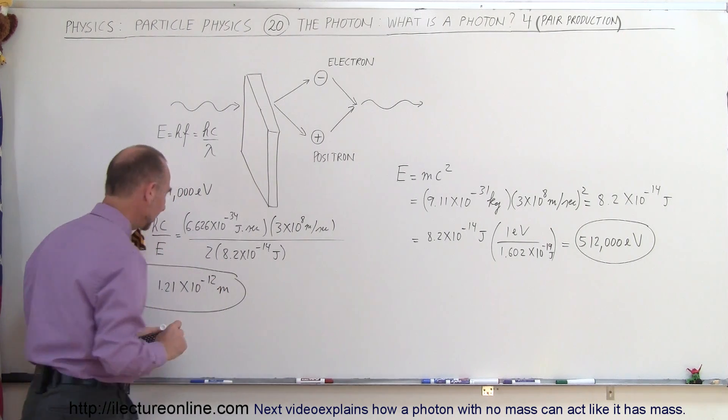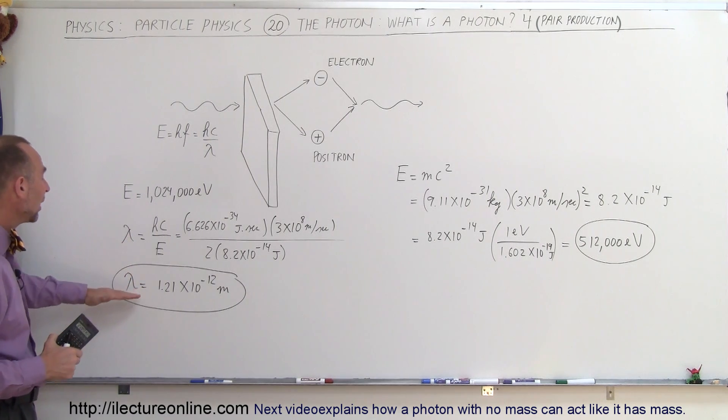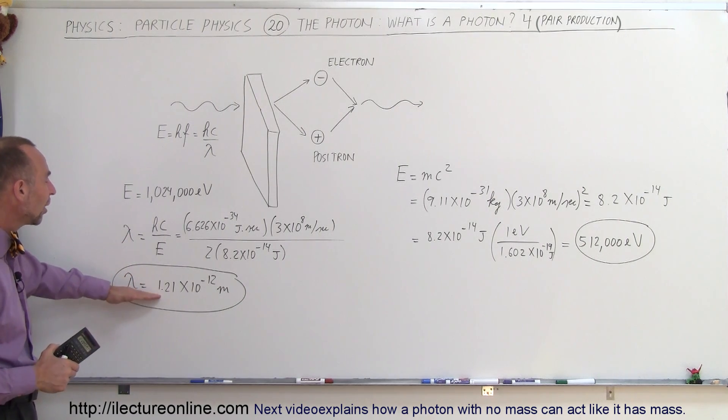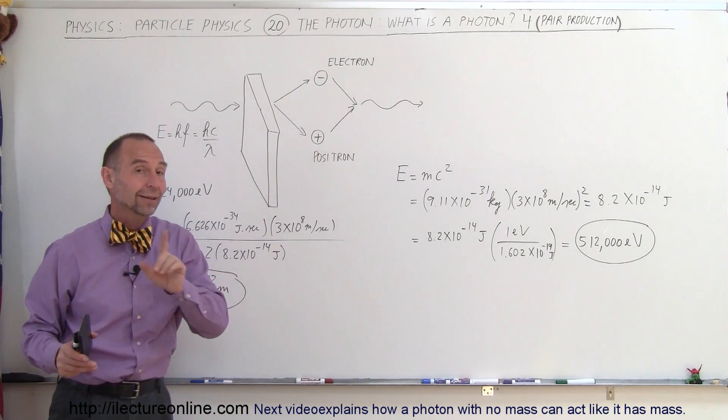And of course, that photon is so energetic that it falls in the realm of gamma rays, so it would have to be a gamma ray photon to produce enough energy to create the two particles, but it can do so.